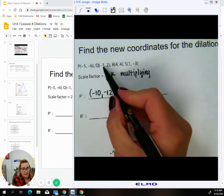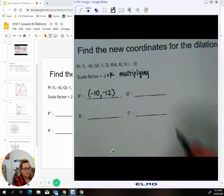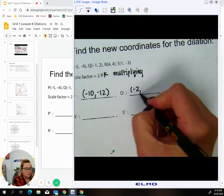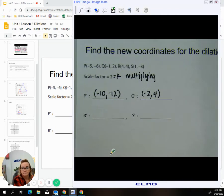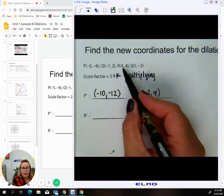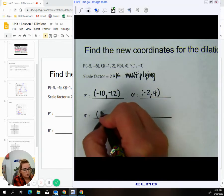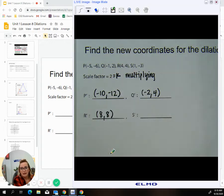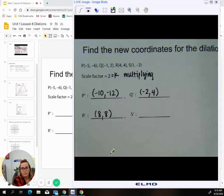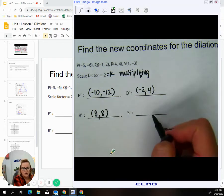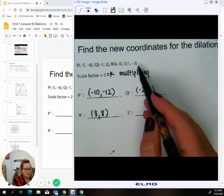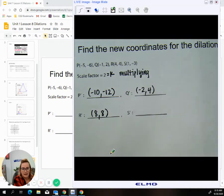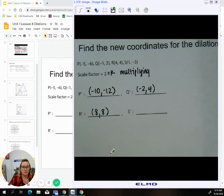We're going to take negative one and two and times them by two and get negative two and four. We are going to get four and four and times them by two and get eight and eight. And you guys figure out what S would be. We're going to take one and negative three and times them by two, and what do you end up getting?